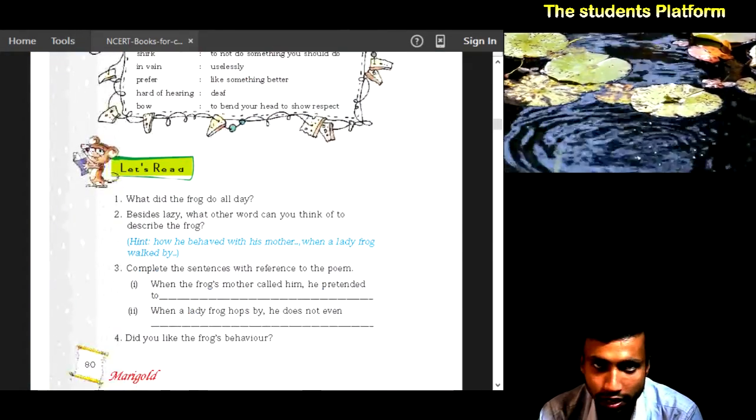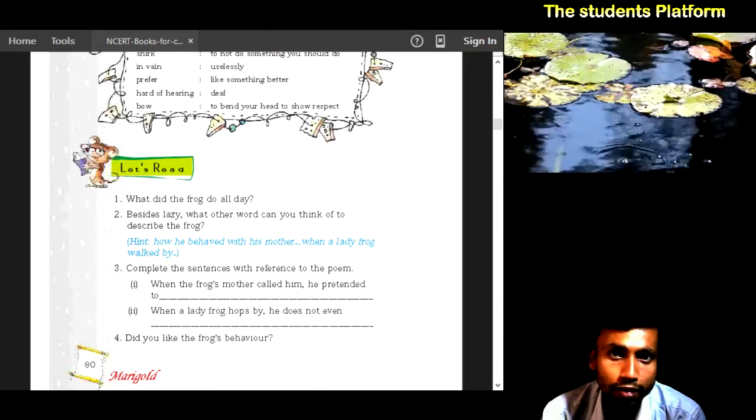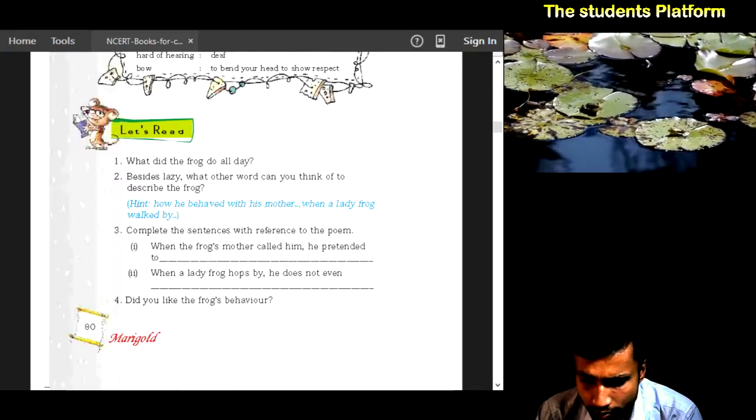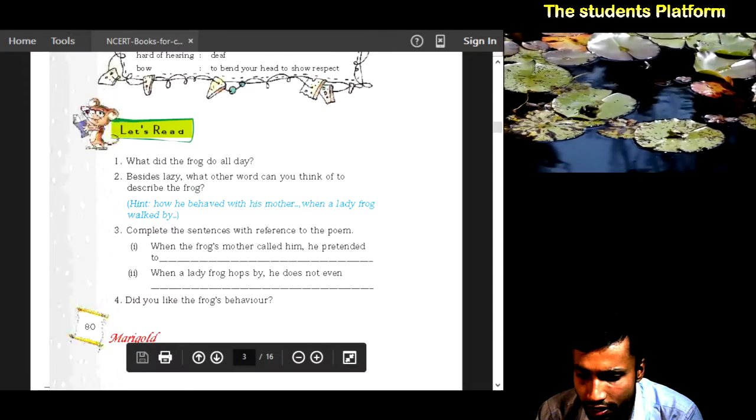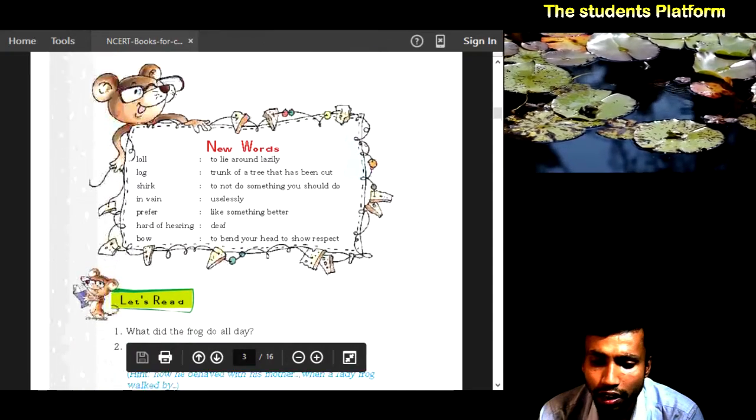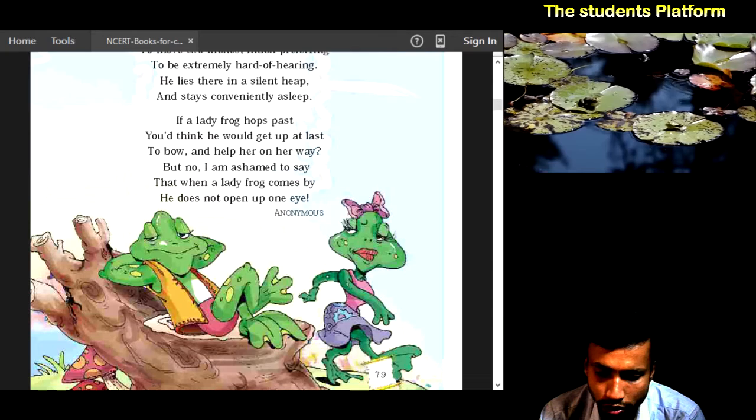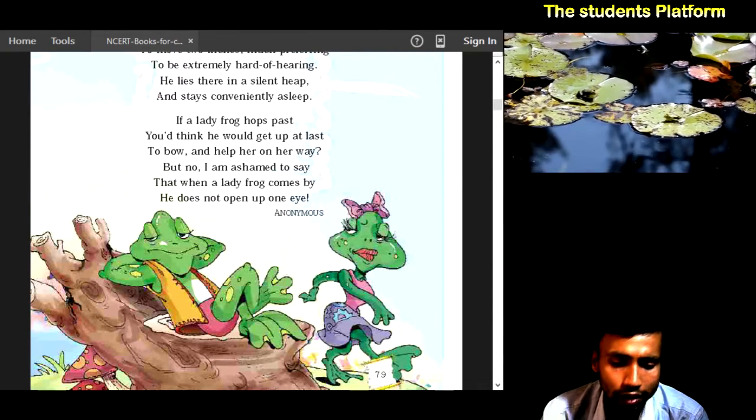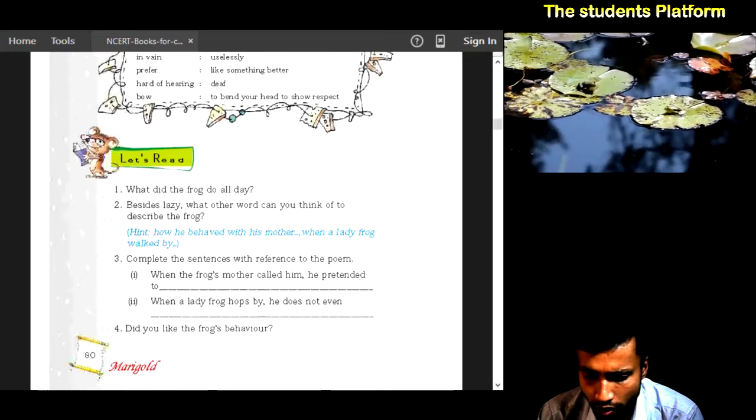When a lady frog hops by, he does not even - what does he do? He does not open one eye. He does not open one eye. This was the question and answer. Refer to the poem and understand.